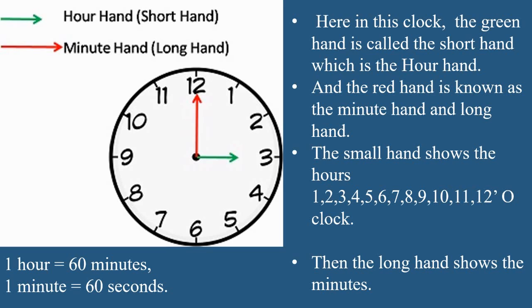The small hand shows the hours — that is 1 o'clock, 2 o'clock, 3 o'clock, 4 o'clock, 5 o'clock, 6 o'clock, 7 o'clock, 8 o'clock, 9 o'clock, 10 o'clock, 11 o'clock and 12 o'clock. The long hand shows the minutes. 1 minute is equal to 60 seconds, and 1 hour is equal to 60 minutes.